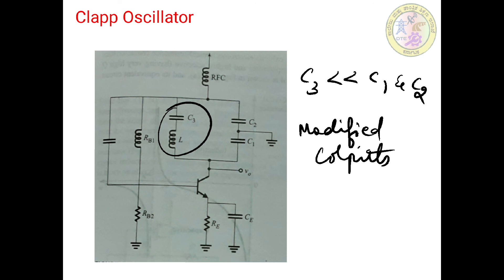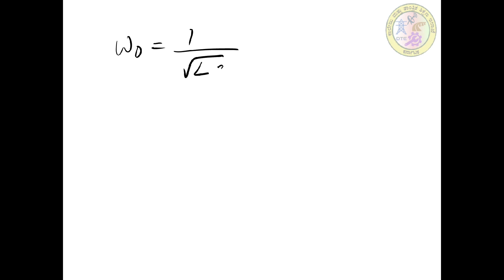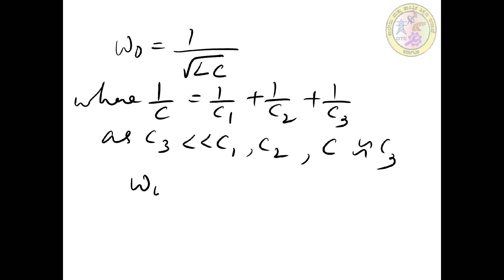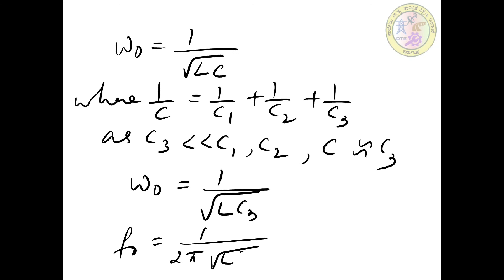The remaining biasing arrangement is similar to the Colpitts arrangement. For the Clapp oscillator, the frequency of oscillation is derived as ω₀ = 1/√(LC), where 1/C = 1/C1 + 1/C2 + 1/C3. Since C3 is very much less than C1 and C2, C is approximately equal to C3, so ω₀ ≈ 1/√(LC3). Therefore, the frequency of oscillation is f = 1/(2π√(LC3)).